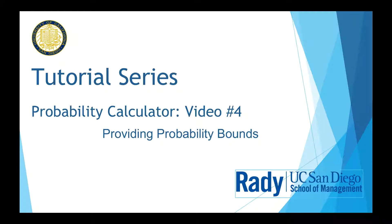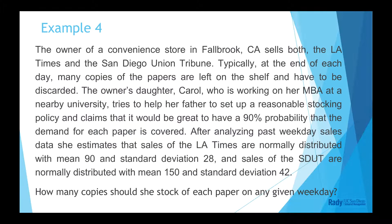Welcome back to the tutorial videos of probability calculator. Today, I am going to demonstrate how to provide probability bounds in Radiant. We have solved three examples, and for those examples, we chose values as input type. This video will show you when and how to use probabilities as input type. We will work on example 4.